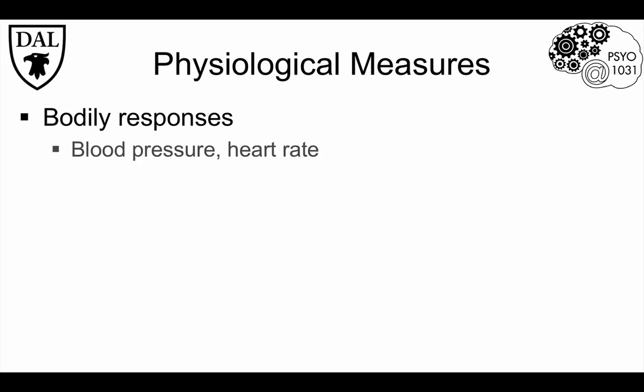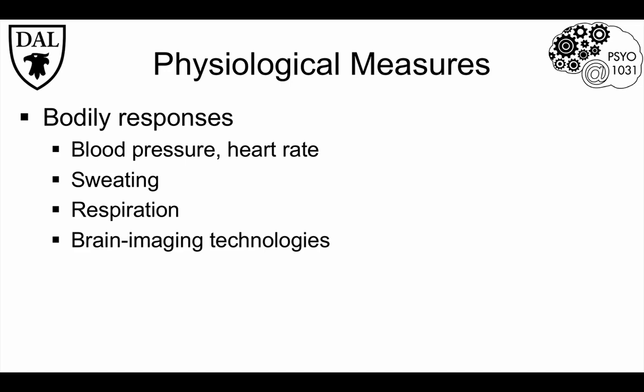Physiological measures are different than the other measures we considered so far, since they mainly rely on involuntary bodily responses. This includes cardiovascular measures such as blood pressure and heart rate, sweating, respiration, and measures of brain activity taken with neuroimaging.